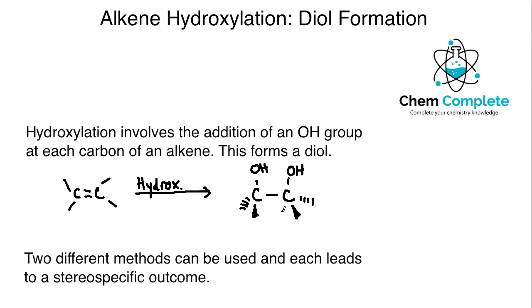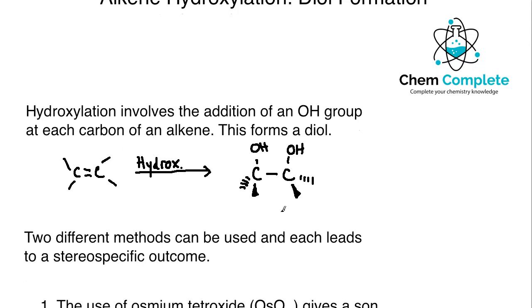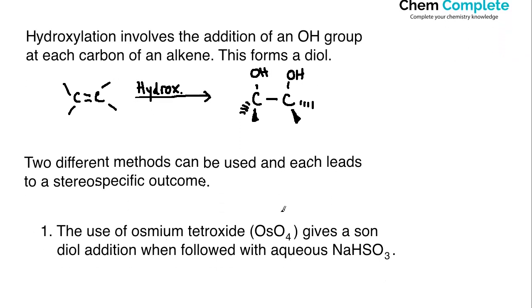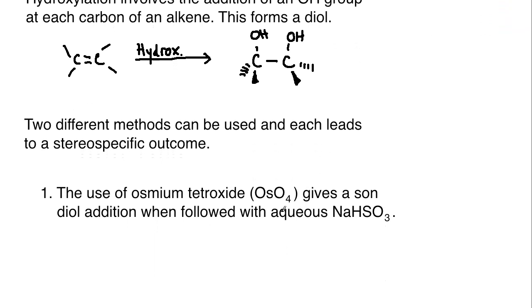There are two different methods that can be used for hydroxylation, and each method is going to lead to a stereospecific outcome. Regiochemistry isn't going to be applied here because we're really just adding two of the same group — we don't need to concern ourselves with, for instance, an alcohol and a hydrogen the way we would in a typical hydroxylation. So we've got two different methods.